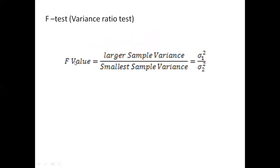Now, f-test. What is f-test? F-test is also called the variance ratio test. F-test is used to compare two independent estimations of population variance. The two samples have the same variance in f-test, and f-test is a small sample test. The formula for calculating the f-value is the larger sample variance divided by the smaller sample variance, that is sigma-1 squared divided by sigma-2 squared.